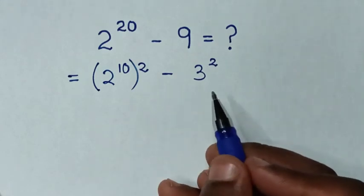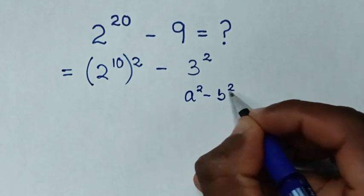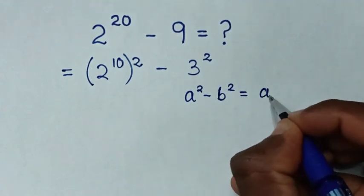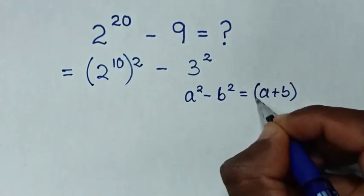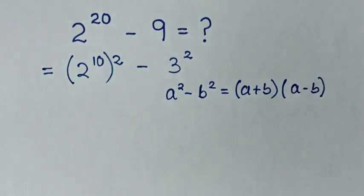From here, this is in the form of a perfect square. So I'll apply the rule: a^2 - b^2 = (a+b)(a-b).